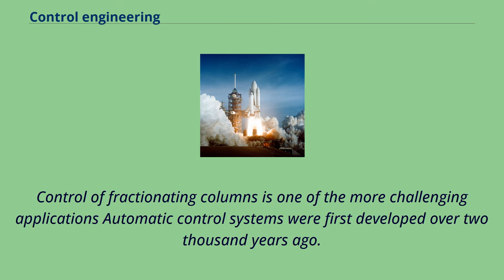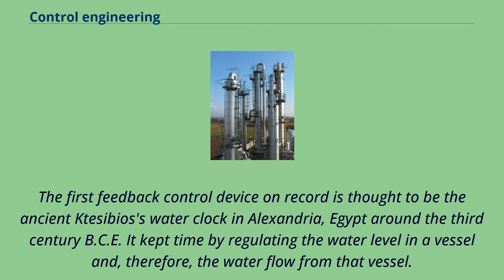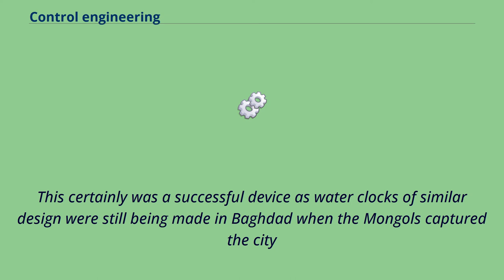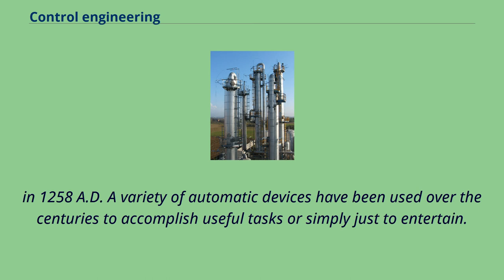Control of fractionating columns is one of the more challenging applications. Automatic control systems were first developed over 2,000 years ago. The first feedback control device on record is thought to be the ancient Ktesibios's water clock in Alexandria, Egypt, around the 3rd century BCE. It kept time by regulating the water level in a vessel and, therefore, the water flow from that vessel. This was a successful device, as water clocks of similar design were still being made in Baghdad when the Mongols captured the city in 1258 AD. A variety of automatic devices have been used over the centuries to accomplish useful tasks, or simply to entertain.